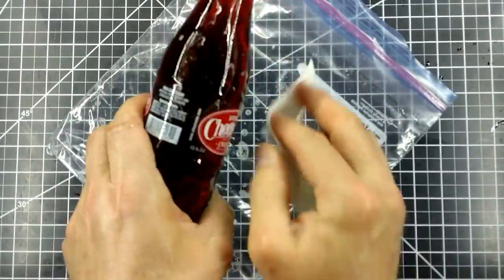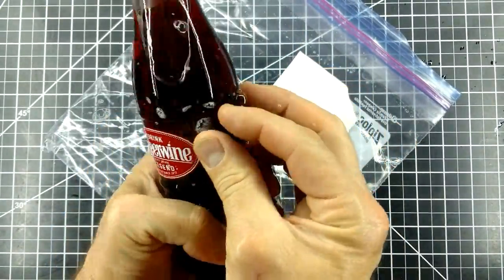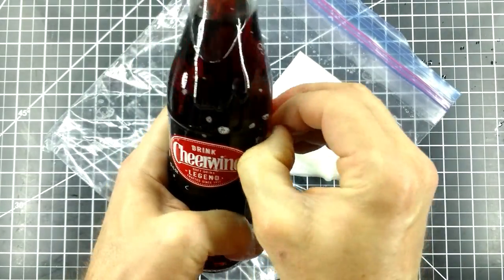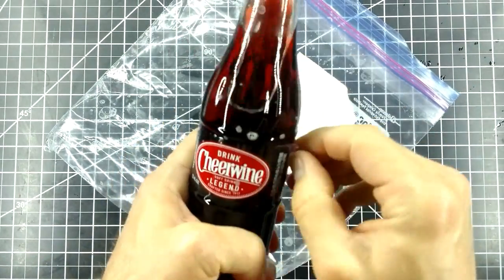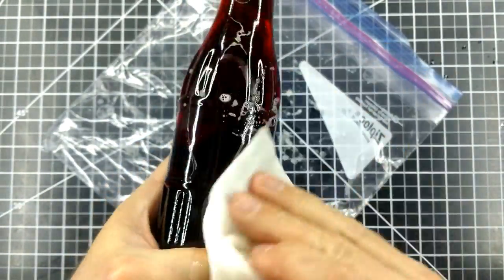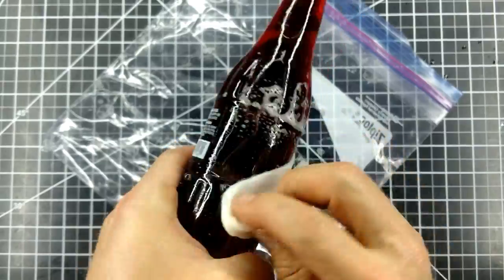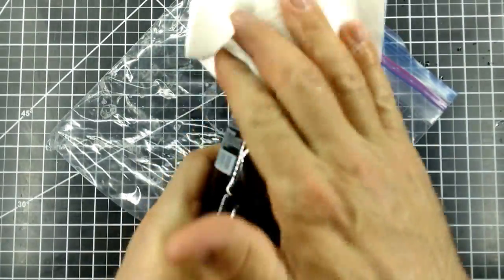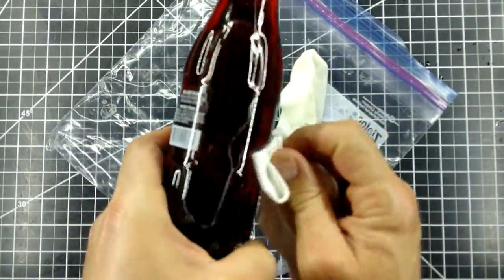Next, I try removing the plastic label. It's a bit tough to get started, but comes off in one piece. It didn't feel like soaking it made any difference. There isn't much glue left behind, but it isn't too hard to clean off with the soapy water.